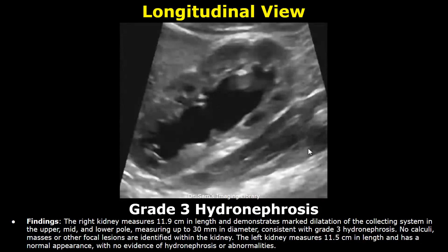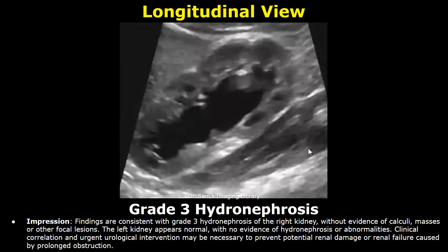This is a report for grade 3 hydronephrosis. You can write marked dilatation of the collecting system, then mention the location. Here the collecting system measurement was 30 mm in diameter. This is the impression. The findings are consistent with grade 3 hydronephrosis, and the impression ends with the statement of clinical correlation.